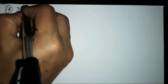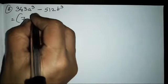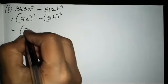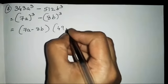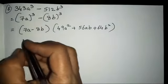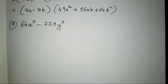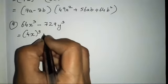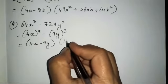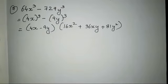The sixth sum is 343a cube minus 512b cube. Since 7's cube is 343 and 8's cube is 512, we expand it as 7a minus 8b times 49a square plus 56ab plus 64b square. The seventh sum is 64x cube minus 729y cube, which becomes 4x whole cube minus 9y whole cube, giving 4x minus 9y times 16x square plus 36xy plus 81y square — done directly since the numbers are manageable.